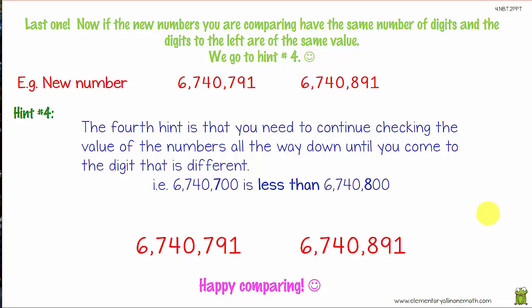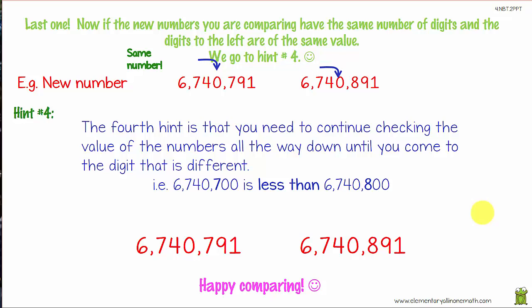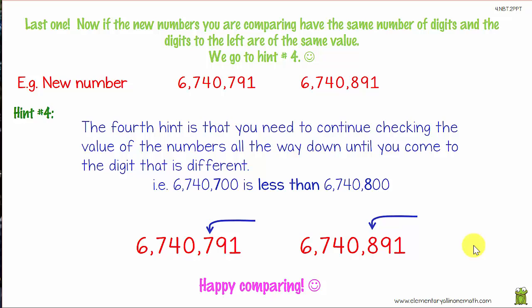Now if the numbers have the same number of digits — seven and seven — and the digits to the left are the same value, we go to hint number four. Hint four: continue checking the value of the digits all the way down until you come to a digit that is different. In this case, the seven in the hundreds and the eight in the hundreds column are the ones that differ. So six million, seven hundred and forty thousand, seven hundred and ninety-one is less than six million, seven hundred and forty thousand, eight hundred and ninety-one — we use the less than symbol.